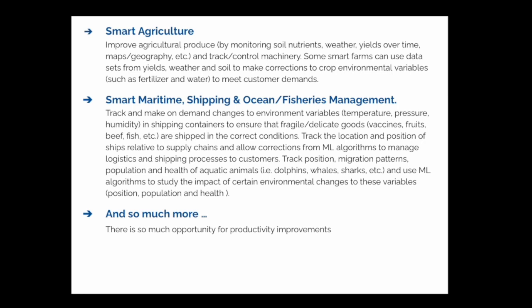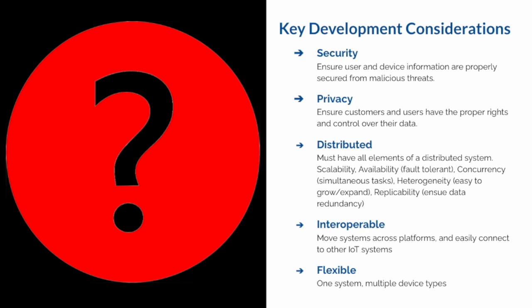There are so many things IoT systems can be connected to and used for. What are the key development considerations when building an IoT system? Security is very important — people are always going to try to hack into your system and cause harm. You need to carefully consider the security and privacy of the people whose information your system holds.